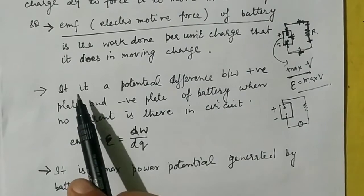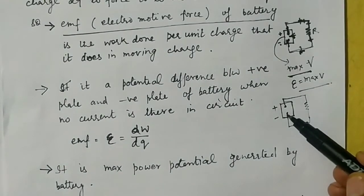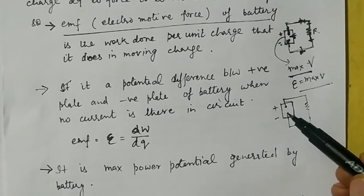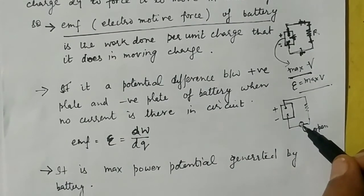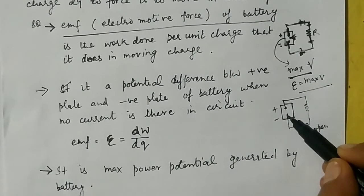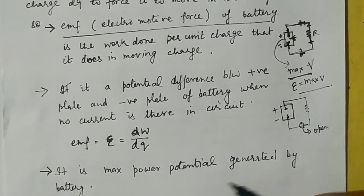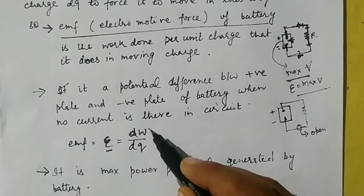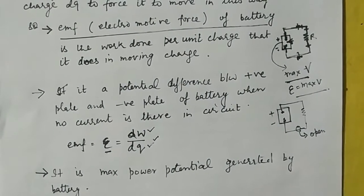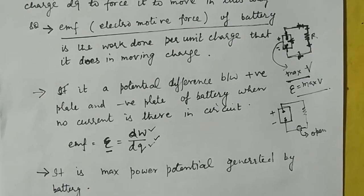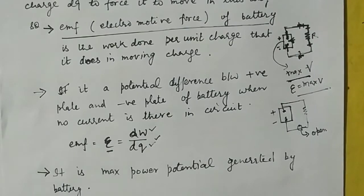There is a second definition of EMF as well. EMF is the potential difference between the electrodes of the battery when there is no current — that is, when the key is open. So when the key is open, the potential difference between the two terminals of the battery is called EMF. According to the formula, EMF equals the amount of work done per unit charge. Basically, the maximum potential generated by a battery is known as EMF.